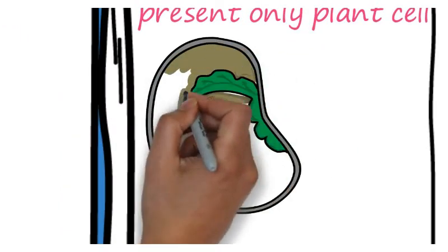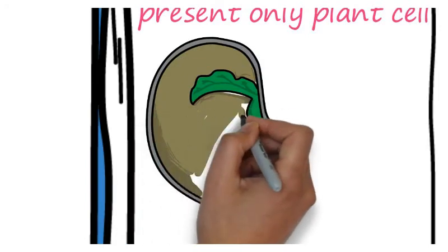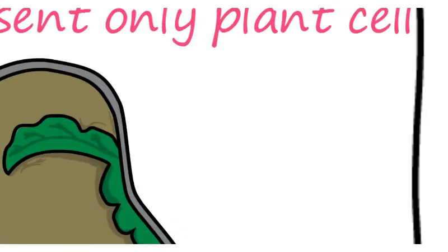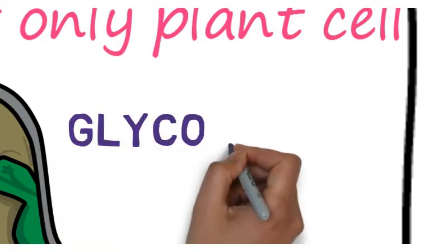They are most abundant in seedling cells.